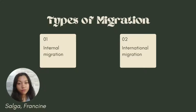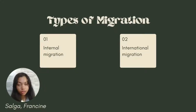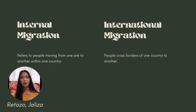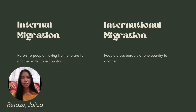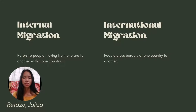There are two types of migration: internal migration and international migration. These will be discussed by Mr. Tazo. Good day, I am Chalisa May F. Tazo and I am going to report about the two types of migration. Internal migration refers to a change of residence within national boundaries, such as between states, provinces, cities, or municipalities.